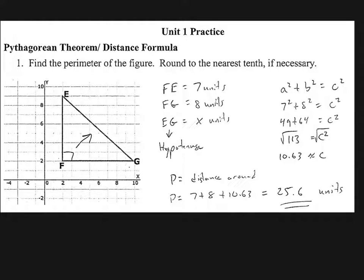This video is exclusively dedicated to the Unit 1 practice exam. In our first question, we're dealing with the Pythagorean Theorem in part. What we want to do is find the perimeter of the figure, and we're going to round to the nearest tenth if necessary. So just a couple of key things: make sure that our rounding is correct.